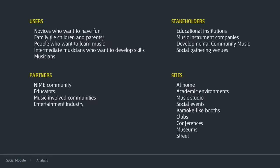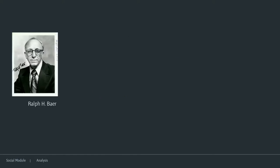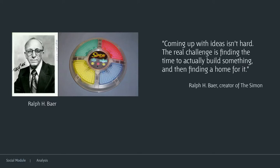I'm now identifying my user stakeholders and partners. I can't say exactly who it's going to be or where exactly, and that was annoying me — I had a thesis crisis this week. So my module evaluation is: I now have more and more questions, I don't have too many answers, but at least the social scope of these questions is being narrowed. To close, I want to bring a quote from Ralph H. Baer, creator of Simon and other early electronic games: 'Coming up with ideas isn't hard. The real challenge is finding the time to actually build something and then finding a home for it.' Thank you.